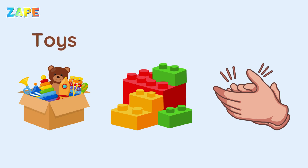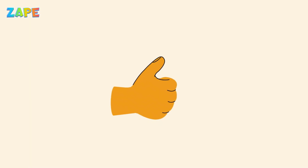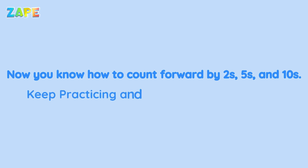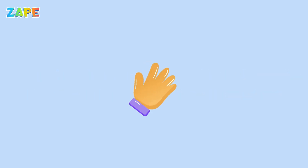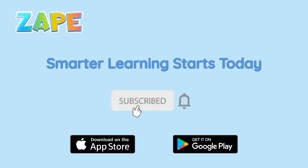You can count toys, blocks, or claps with ease. It makes counting easy and fast. You did a great job today. Now you know how to count forward by twos, fives, and tens. Keep practicing and have fun with numbers. Goodbye, little math stars. Smarter learning starts today. Download and subscribe to ZAPE Learning App now.